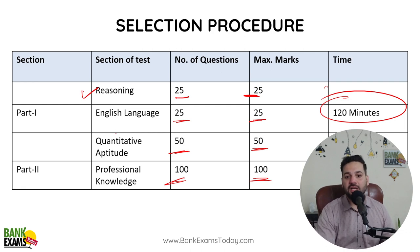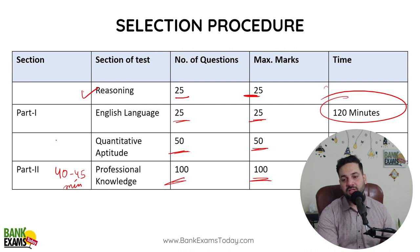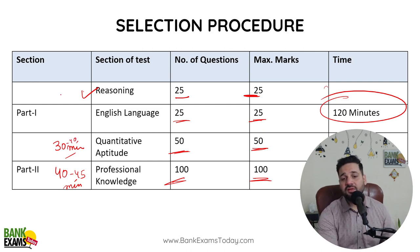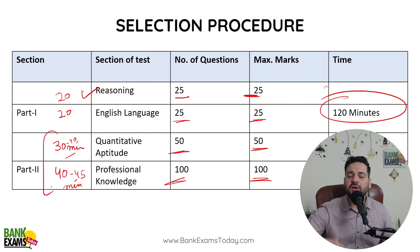If you solve each question in 30 seconds, you still need about 45 minutes for professional knowledge. For quantitative aptitude, you need at least 30 minutes to attempt 50 questions — realistically you'll do 35-40 questions in 35-40 minutes. For English language and reasoning ability, allocate about 20 minutes each. There is some buffer time remaining, which makes this a sound time allocation.